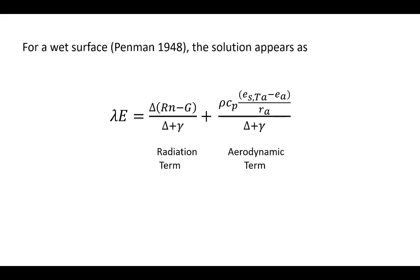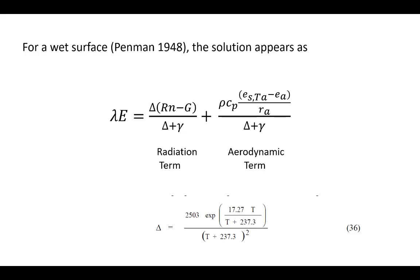When finally solved in Penman's form, we can predict evaporation or latent heat flux from the surface with two terms. You see net radiation minus G on the left, the slope of the saturation vapor pressure curve delta, and the psychometric constant. The first term on the right-hand side is called the radiation term. On the right, you see the saturation vapor pressure deficit and the aerodynamic resistance — which includes a wind speed effect — called the aerodynamic term. The slope delta can be calculated by taking the derivative of Tetens' equation using air temperature.